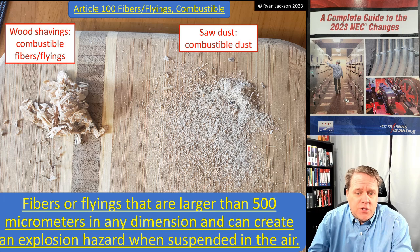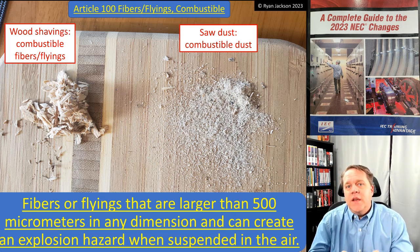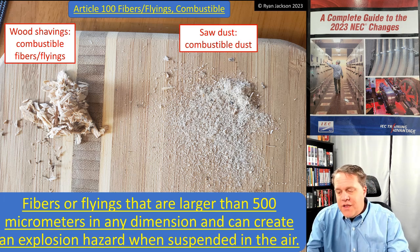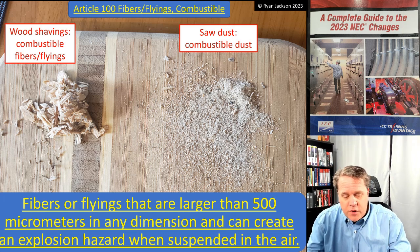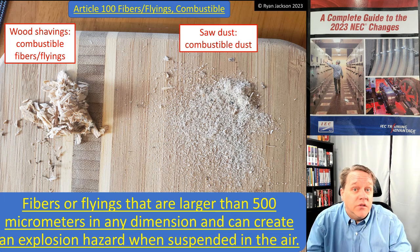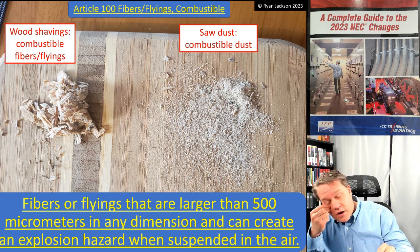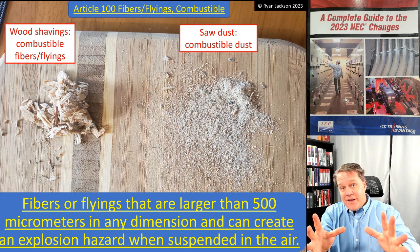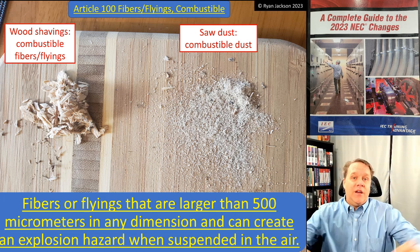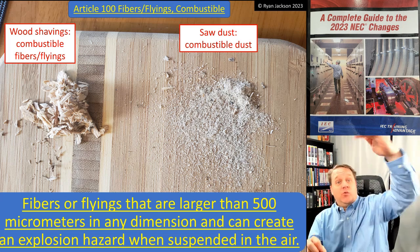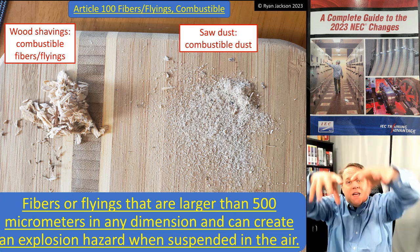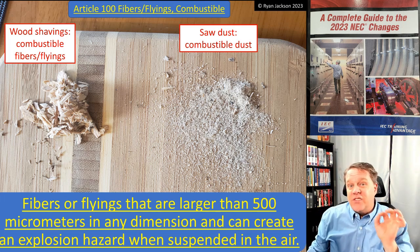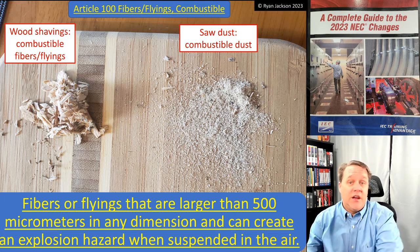Suspensions of combustible material are taken much more seriously than accumulations. Consider the Imperial Sugar Factory explosion in Georgia in 2008, which completely decimated about 800,000 square feet of building. Granulated sugar layered over everything didn't itself cause the fire — a small ignition shook the building, launching the sugar into suspension throughout the entire facility. When the sugar rained back down as suspended combustible dust, it leveled the entire building. Suspension versus accumulation are two very different hazards.